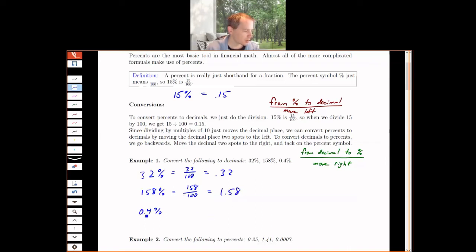For 0.4 percent, percent means divided by 100, so if I want to convert to a decimal, I just move left two places. Left the first place will give me a 0 in front, and left the second place will give me two 0s in front, so 0.004.